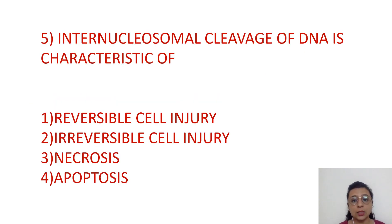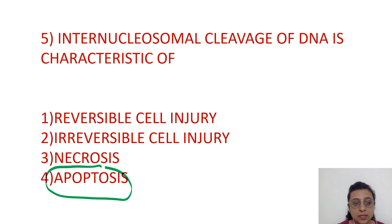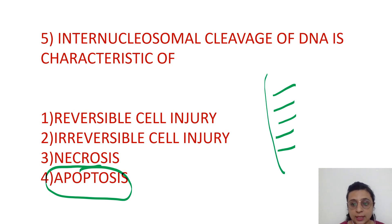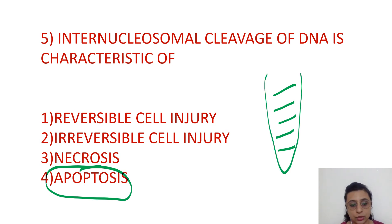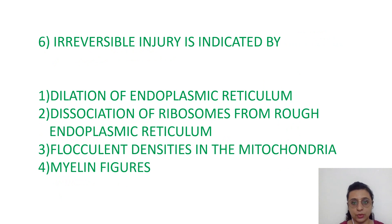Internucleosomal cleavage of DNA is a characteristic of the well-planned type of apoptosis, where at every 180 base pairs there is internucleosomal breakage, giving a step ladder pattern on agarose gel electrophoresis.